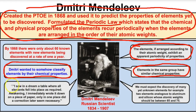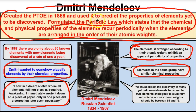Mendeleev is quoted as saying: 'I saw in a dream where all elements fell into place as required. Awakening, I immediately wrote it down on a piece of paper. Only in one place did a correction later seem necessary.' So Dmitry Mendeleev was a Russian scientist credited with developing the very first periodic table, formulating the periodic law, and leaving blank spaces for elements yet to be discovered.